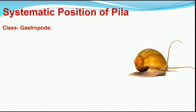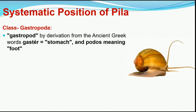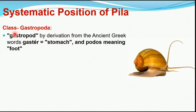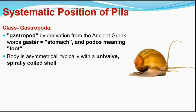Pila is included in Class Gastropoda. The word 'gastropod' is a Greek word in which 'gaster' means stomach and 'photos' means foot. Those animals from which the foot arises from the stomach are included in Class Gastropoda. A second feature is that the body is asymmetrical, typically with a univalve — a single-walled, spirally coiled shell. We will study the structure of the shell in more detail in the next lecture.